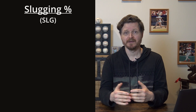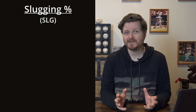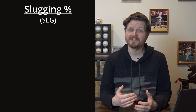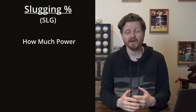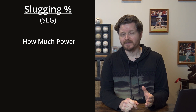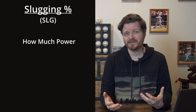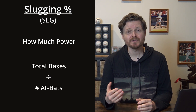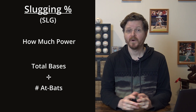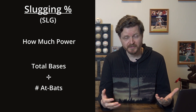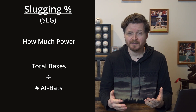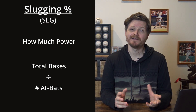The next rate stat is slugging percentage, which goes even further. It doesn't just count how many times you hit the ball and get on base safely — it quantifies the power of the hitter. Like batting average, slugging percentage only counts hits and doesn't include walks or hit by pitch, but it counts hits differently based on type. It's calculated by total bases divided by number of at bats, where doubles are worth two, triples three, and home runs four. A slugging percentage above .450 is considered pretty good; above .600 is elite.